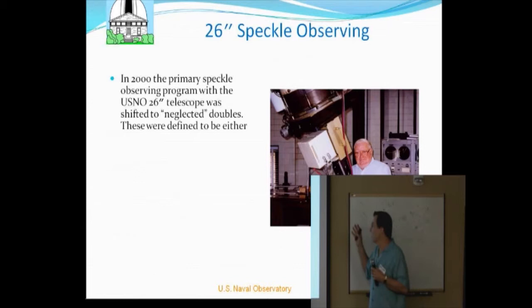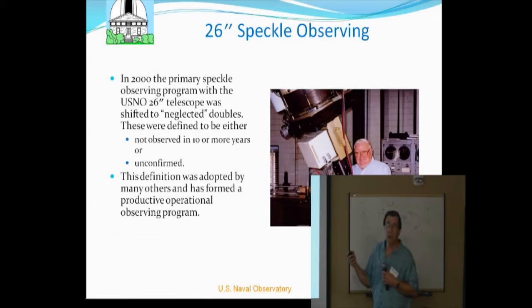So that started about 1990, 91, thereabouts. He abandoned his micrometry to go forward with speckle. In about 2000, we switched the program somewhat. This is after Charles had died and Brian and I were in charge of things. So we switched it over to look for these neglected doubles, which a couple people have mentioned. And we made a definition of it: not observed in some time or it was unconfirmed. This is an 1873 Clark refractor, by the way.